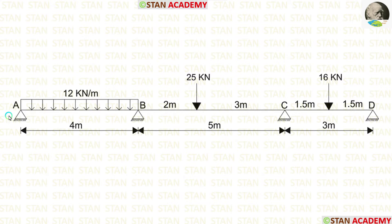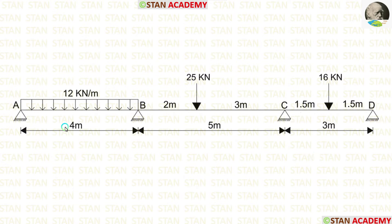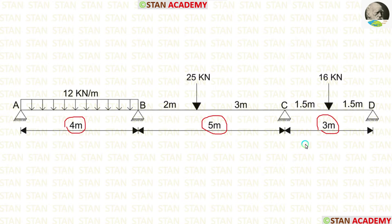In this beam, there are four hinged supports — at point A, point B, point C, and point D. Span AB is 4 m long, span BC is 5 m long, and span CD is 3 m long.